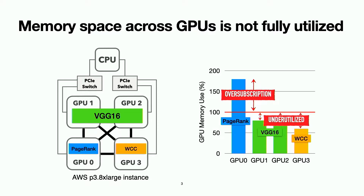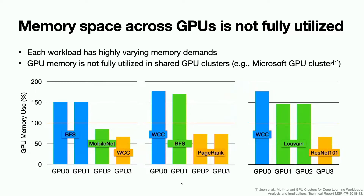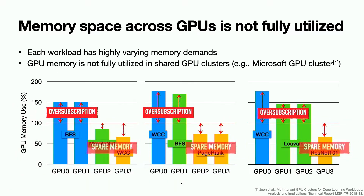On the other hand, other workloads leave a small amount of memory on GPU 1, 2, and 3. We profiled several scenarios running graph analytics and DNN training jobs using one or multiple GPUs. Because each workload has highly varying memory demands, some GPU memory is over-subscribed but some is not fully utilized, causing memory imbalance across workloads. A study from Microsoft reports that memory utilization is about 75% in shared multi-GPU clusters, showing that memory space across GPUs is not efficiently utilized.